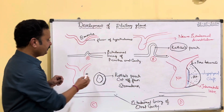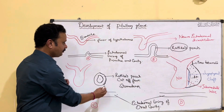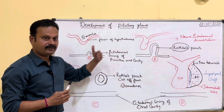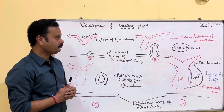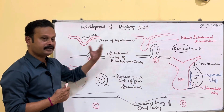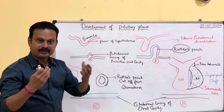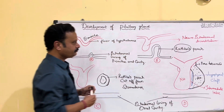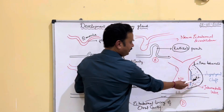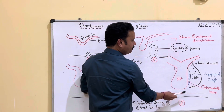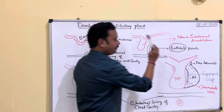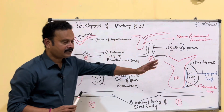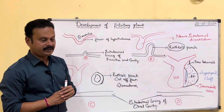So finally, Rathke's pouch, which is derived from the ectoderm lining the roof of the primitive oral cavity, gives rise to the anterior lobe, intermediate lobe, and the cleft in between them.